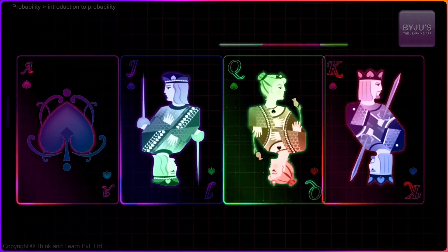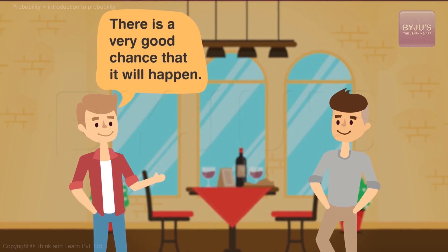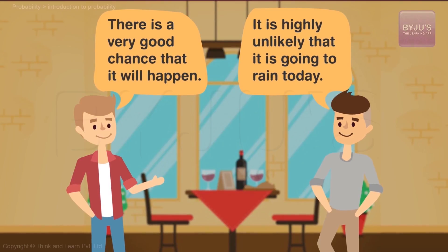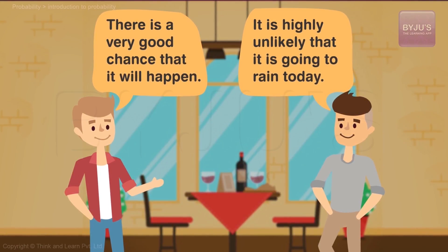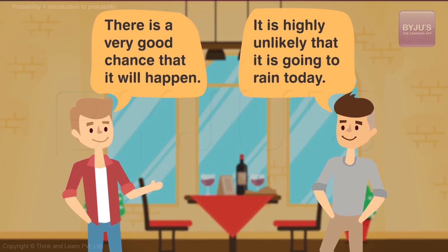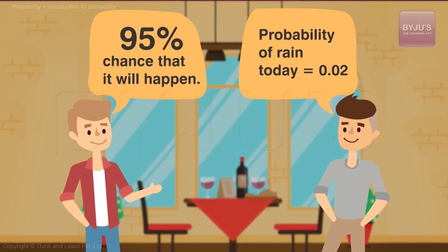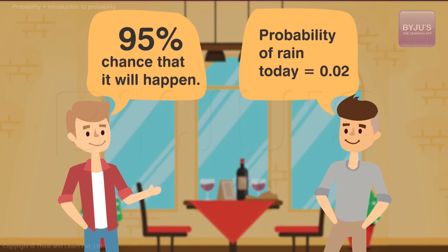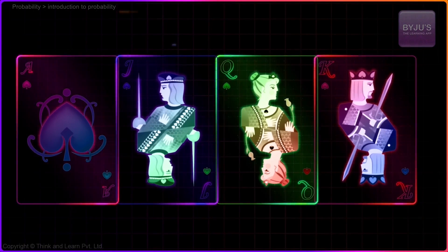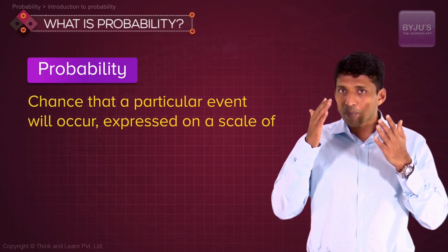So rather than just mentioning 'there's a very good chance that the event will happen' or 'it's highly unlikely that it's going to rain today,' we'll try putting some numbers to it when it comes to mathematics. In common language, the word probability is used to mean the chance that a particular event will occur.